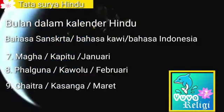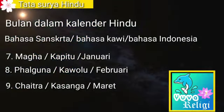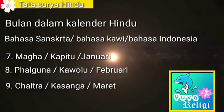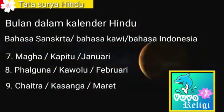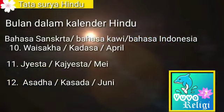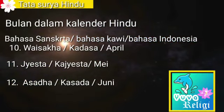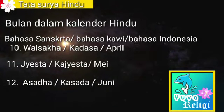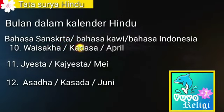Ketujuh: Maga atau Sasi Kepitu, bulan Januari. Kedelapan: Palguna atau Sasi Kowulu, bulan Februari. Kesembilan: Caitra atau Sasi Kesange, bulan Maret, yaitu bulan Nyepi. Kesepuluh: Waisaka atau Sasi Kedase, bulan April. Kesebelas: Jeste atau Sasi Ke Jeste, bulan Mei. Keduabelas: Asade atau Sasi Kasade, bulan Juni. Itulah 12 bulan dalam Sasi.